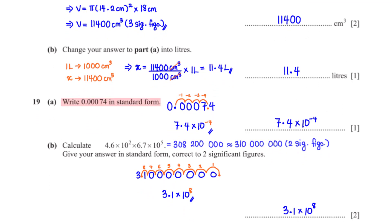Write 0.000074 in standard form. Move the decimal point to a position after the first non-zero digit, which is 7, giving 7.4. Since we moved the decimal 4 units to the right, we multiply by 10⁻⁴. Answer: 7.4 × 10⁻⁴.